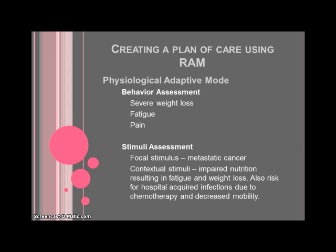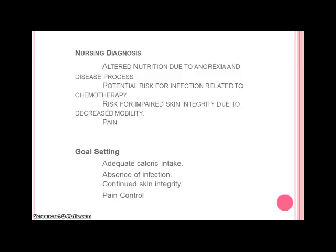Secondary to the cancer is impaired nutrition, which is contributing to her weight loss and a risk of infection. That's the contextual stimuli. After assessing the stimuli and the behavior, we need to come up with some nursing diagnoses. She has altered nutrition due to anorexia and the disease process, a potential risk for infection related to chemotherapy, a risk for impaired skin integrity due to decreased mobility, and pain.